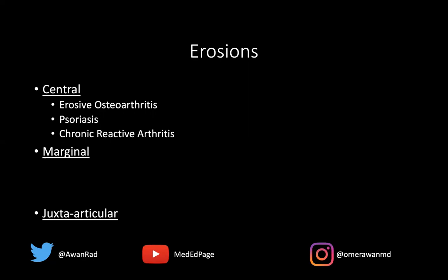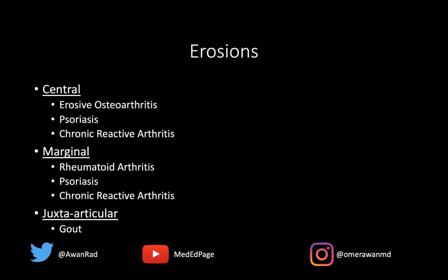Along the periphery — marginal erosions — there are three causes: rheumatoid arthritis, psoriatic arthritis, and chronic reactive arthritis. Notice that psoriasis and chronic reactive arthritis appear in both central and marginal differentials. Erosive OA is the prototypical central erosion with seagull-type erosions, and rheumatoid arthritis is the prototypical marginal erosion, caused by synovial pannus eroding the bare ends of joints where there's less cartilage. For juxta-articular erosions — just outside the joint — it's essentially gout until proven otherwise.